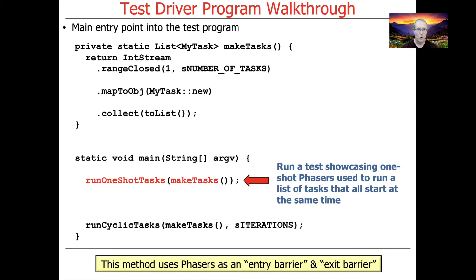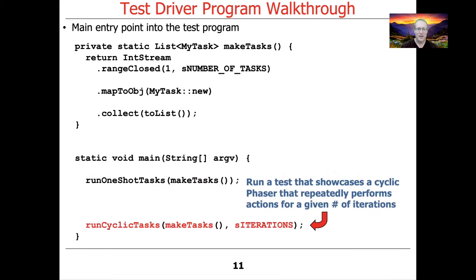The first test is called RunOneShotTasks, and that calls the MakeTasks factory method to make the list of MyTask objects. It then shows how one-shot phasers can be used to run this list of tasks, making sure to start them all at the same time. This example uses phasers as both entry and exit barriers. The second example is called RunCyclicTasks, which showcases a cyclic phaser that repeatedly performs actions for a given number of iterations that are part of the cycles of the phase.